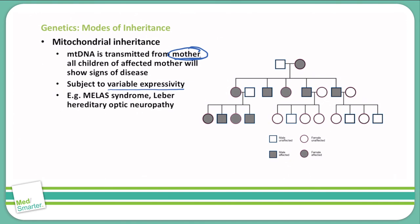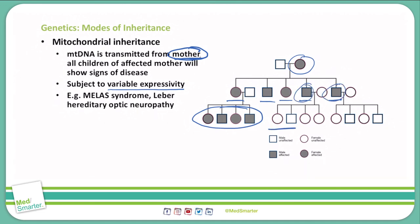Another example is Leber's hereditary optic neuropathy, which involves cell death in the optic nerve neurons, causing subacute bilateral vision loss commonly seen in teens and young adults. It is mostly seen in 90% males and is usually a permanent disease. Looking at the chart on the right, the mother is affected and she passes it on to all of her offspring. The affected female on the left also passes it off to all of her offspring. The two males, however, do not pass it off to any of their offspring, as males do not transmit mitochondrial DNA.